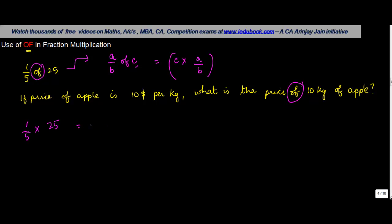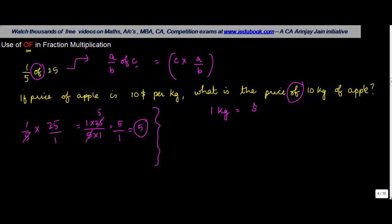So when you say one-fifth of 25, that means 1 into 25 upon 5 into 1. Five goes into 25 five times, so that gives you 5 upon 1, or simply 5. Similarly, if the price of an apple is 10 dollars per kg, the price of 10 kg is 10 into 10, which equals 100. 'Of' means multiplication.